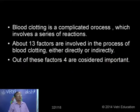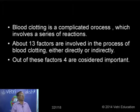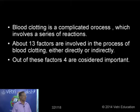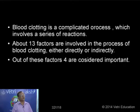Blood clotting is not a simple process. It is a complicated process which involves a number of chemical reactions — biochemical reactions taking place at times of injury in the blood to block the blood vessel opening. For doing such chemical reactions, we need nearly more than 13 factors. There are 13 major factors and also some minor factors.